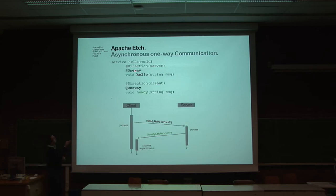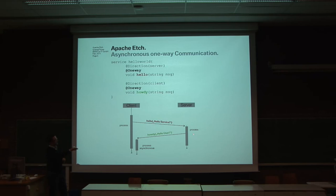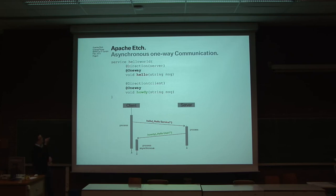This is especially very good for interactive applications that require communication in both directions. You can also choose how your function calls are delivered. What I showed before are synchronous blocking calls that wait for the result. In Edge, you can choose whether you want functions to be blocking or not — just annotate the function with 'one way'. What happens on the wire is asynchronous fire-and-forget calls: it doesn't wait for the function to return, just sends the message. The server processes it asynchronously, and the client handles the answer asynchronously too. You get code generated from that service description.